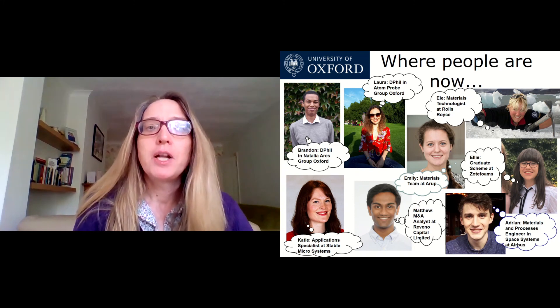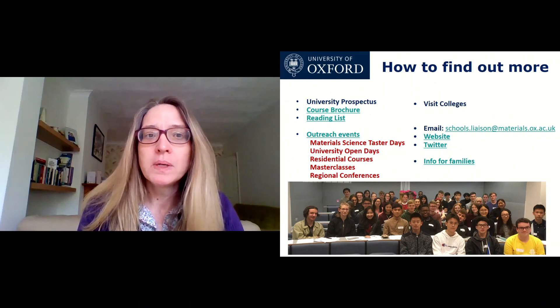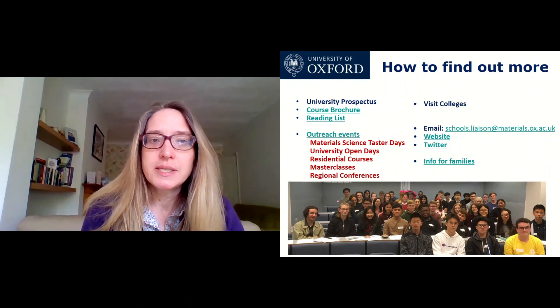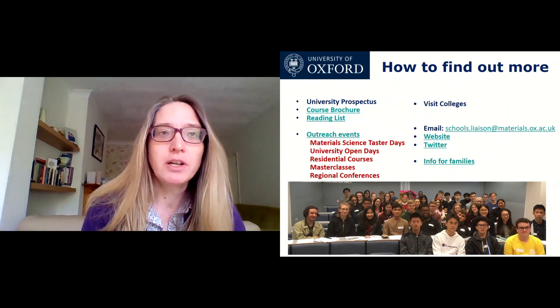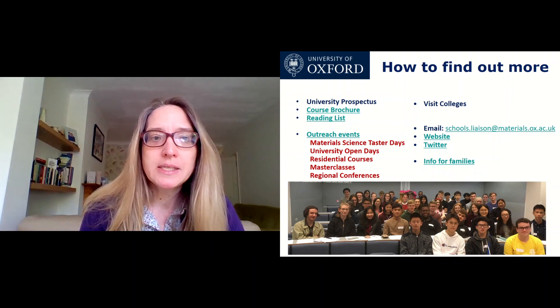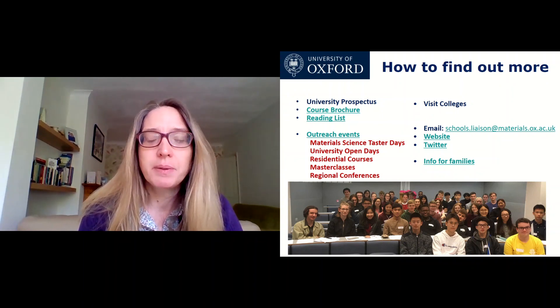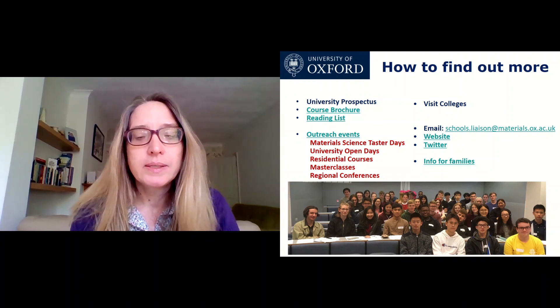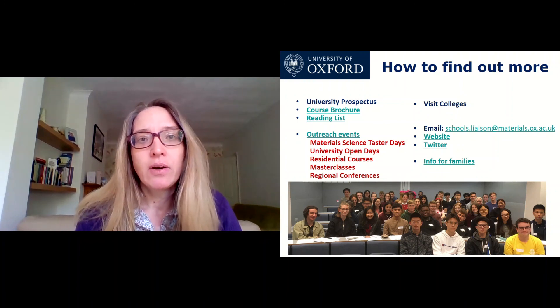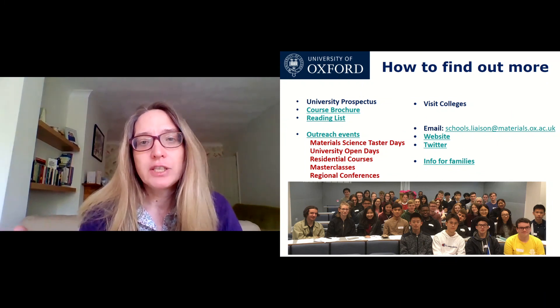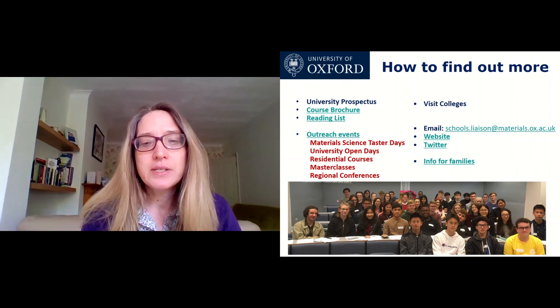There are plenty of jobs for materials scientists in the UK, but not as many well-qualified materials scientists to fill them. So it's a growing, evolving subject that's highly sought after. To find out more, you can look on our website and the Oxford University website, and read the university prospectus. On our website you can look at our course brochure. We also have a reading list on there, and we run a variety of events which you can find on our outreach pages. You can look on all seven colleges' websites. And if you have any questions, do not hesitate to contact us on the email address on this slide.